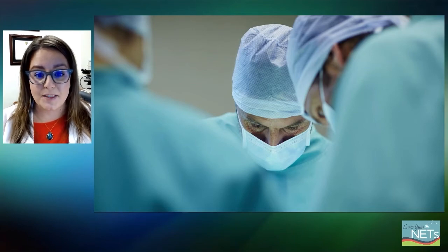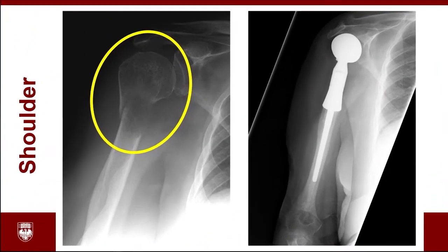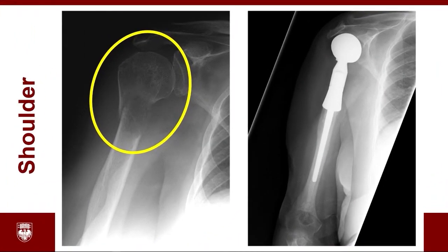I want to share with you some examples of the surgeries that can be done for tumors in different bones of the skeleton. This is an x-ray of a patient who had a large tumor in the upper part of the arm bone affecting the shoulder. You can actually see, if you look very closely, that the arm is broken. In this situation, the best treatment for this patient was to have the tumor and part of the arm bone removed and replaced with a partial shoulder replacement.